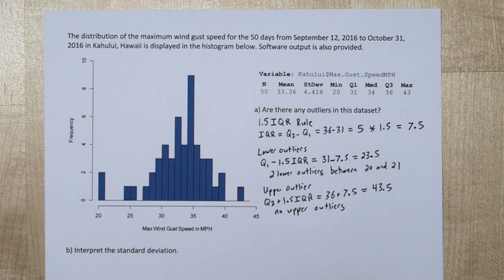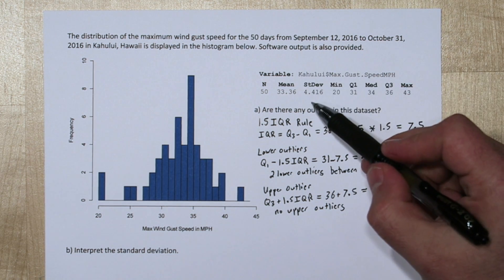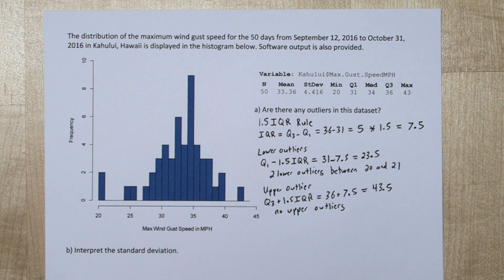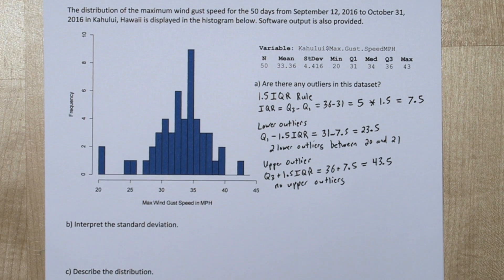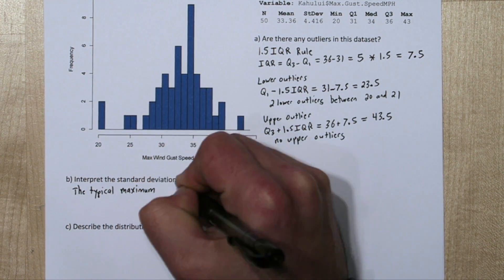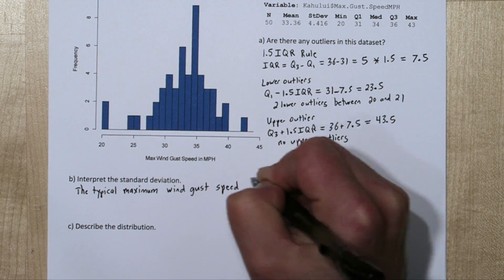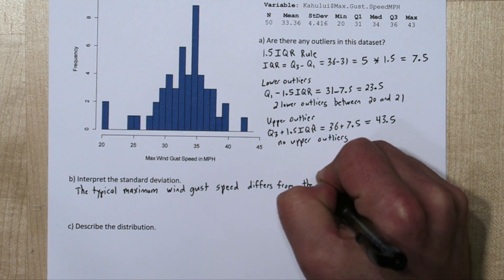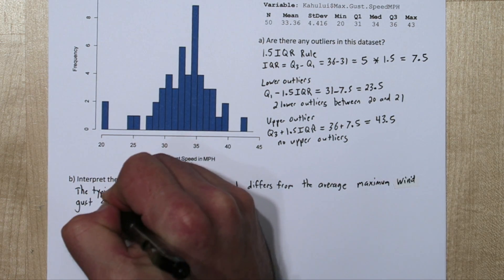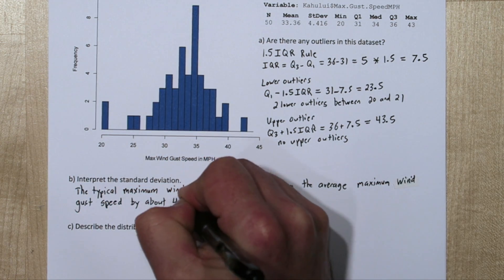Next we need to interpret the standard deviation. From the computer output we see the standard deviation as 4.416. Standard deviation is a measurement of spread. It shows us how far off we expect a typical observation to be from the mean. So we can say the typical maximum wind gust speed differs from the average maximum wind gust speed by about 4.416 mph.